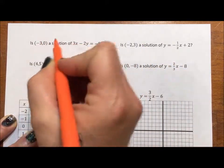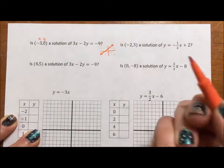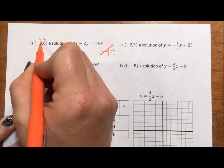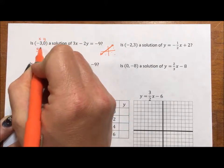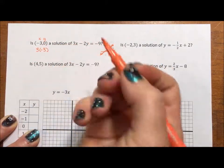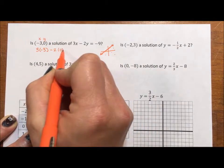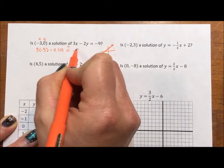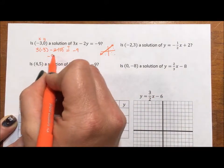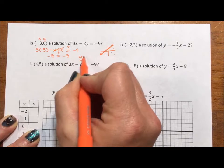Points are normally written alphabetically: x, y. So if I take this x and substitute it in — 3 times negative 3 — and y substituted into y — minus 2 times 0 — does this actually equal negative 9? Well, 0 goes away. Negative 9 equals negative 9. Yes.